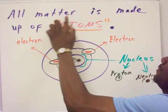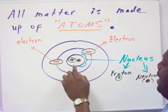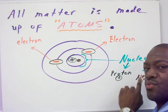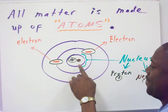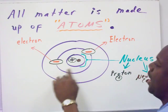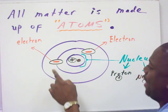All matter is made up of atoms. We have our protons and neutrons which are found here in the center of the atom, which is also known as the nucleus. On the outside of the nucleus we have our electrons.